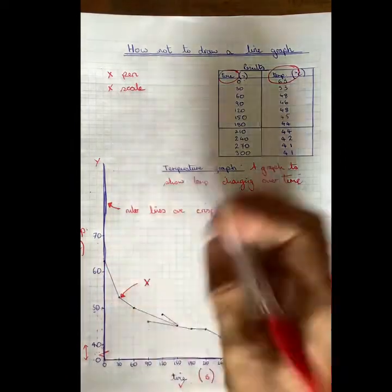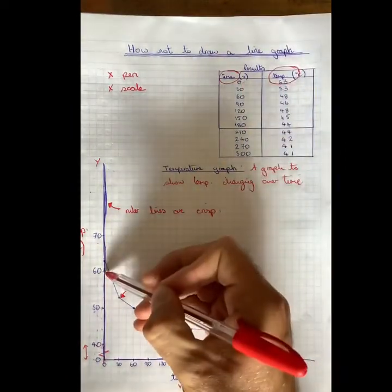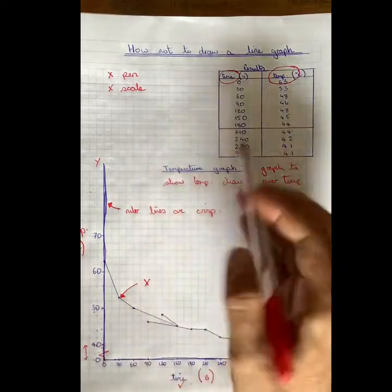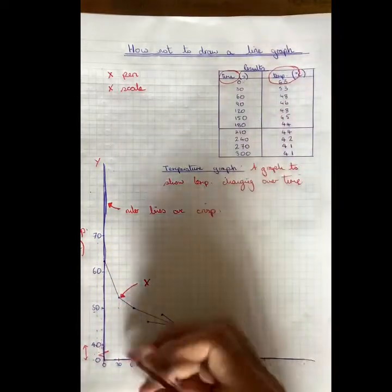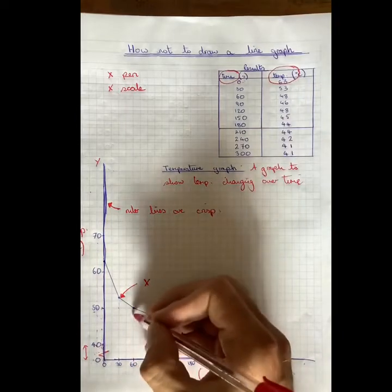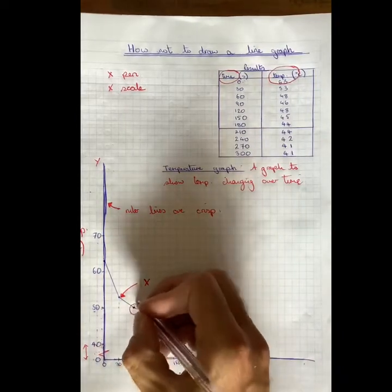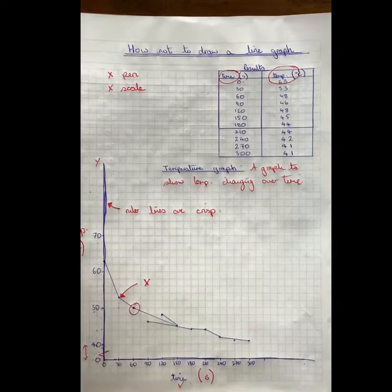Check the plots. 0 is 63, 0 is 62.3. Good. 30, 30, 53, 52.3. 60, 48. 60. Oh, that's wrong. So make sure that your plots are in the correct place, please.